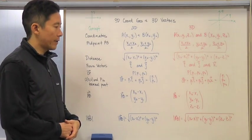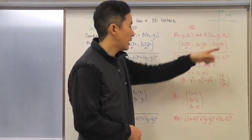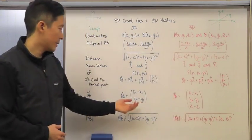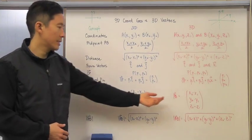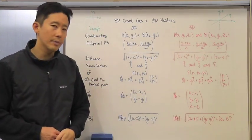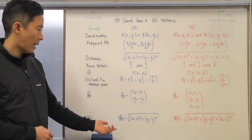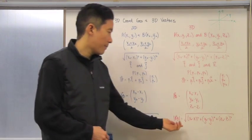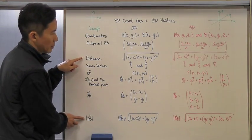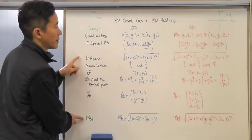If vector AB is not in standard position but we have the endpoints, the formula is exactly the same as the 2D case except the z component is added for three dimensions. The magnitude formula follows the exact same pattern, and notice that the distance formula and the magnitude are consistent with one another, just as in the two-dimensional case.